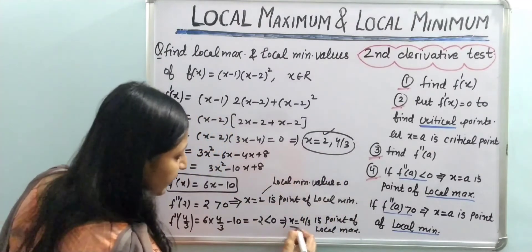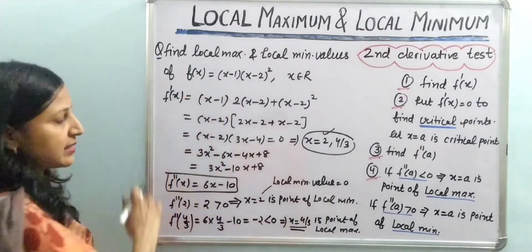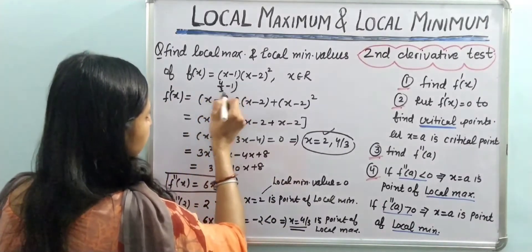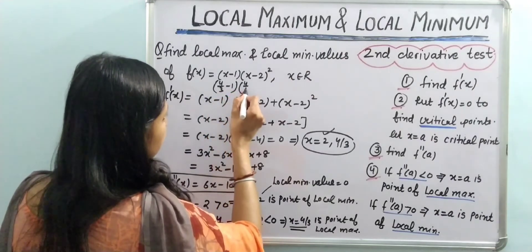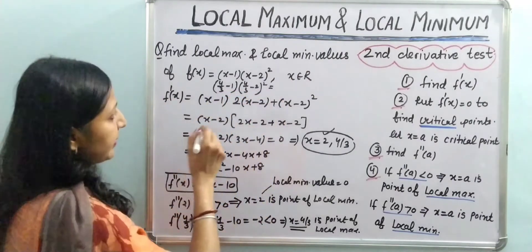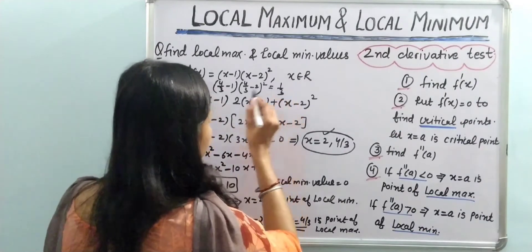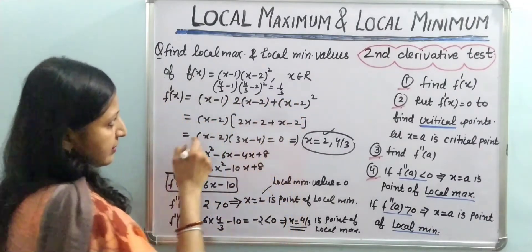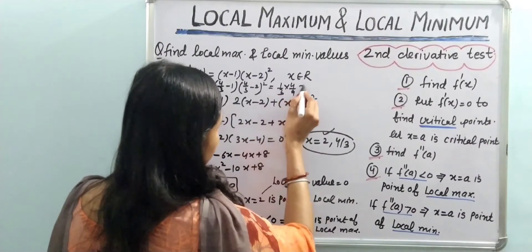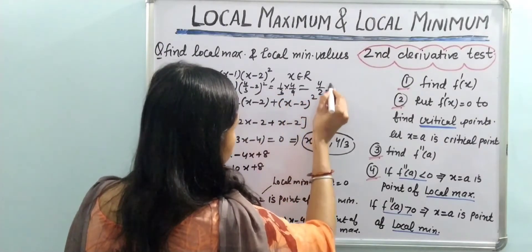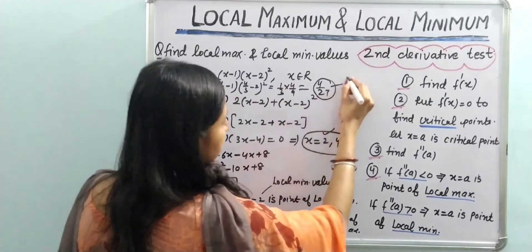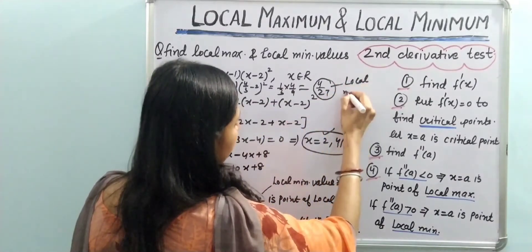Similarly, for local maximum value at x = 4/3, we put 4/3 in the function: (4/3 - 1)(4/3 - 2)² = (1/3)(-2/3)² = (1/3)(4/9) = 4/27. So 4/27 is our local maximum value of the function.